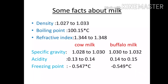Some important physical facts about milk: density of milk is 1.027 to 1.033, boiling point is 100.15 degrees Celsius, and refractive index is 1.344 to 1.348. Specific gravity of cow milk is 1.028 to 1.030 and buffalo milk is 1.030 to 1.032.